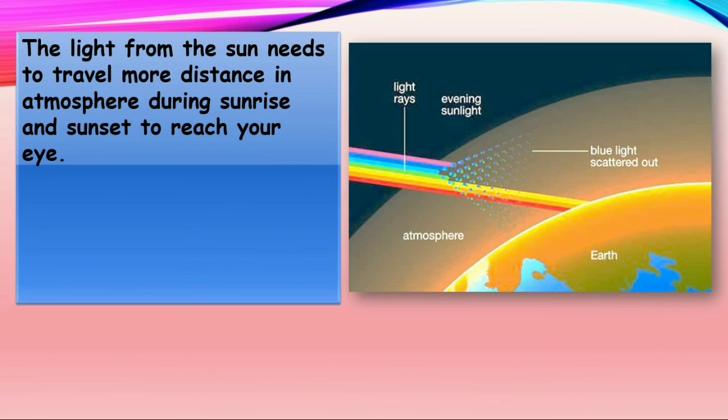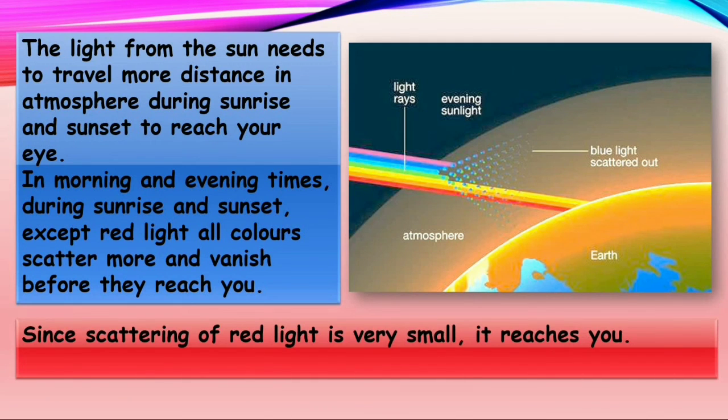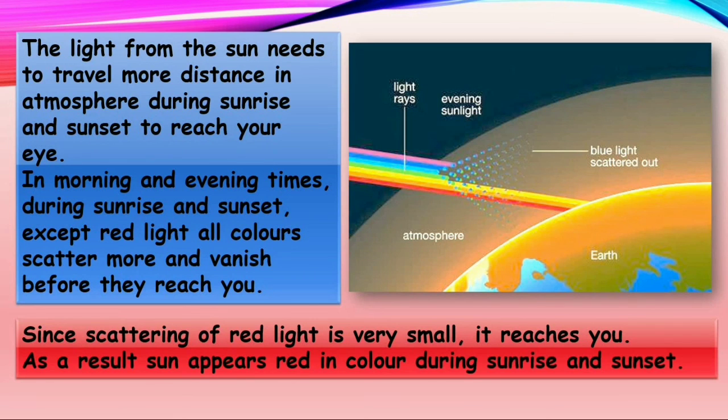The light from the sun needs to travel more distance in atmosphere during sunrise and sunset to reach our eye. So in morning and evening times, during sunrise and sunset, except red light, all colors scatter more and vanish before they reach our eye. Since scattering of red light is very small, it reaches you. So as a result, sun appears red in color during sunrise and sunset.